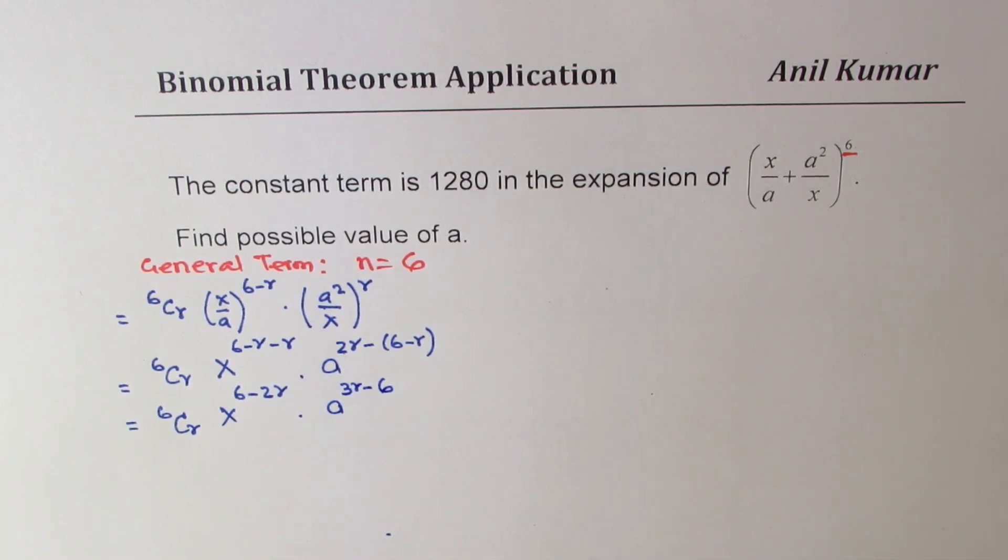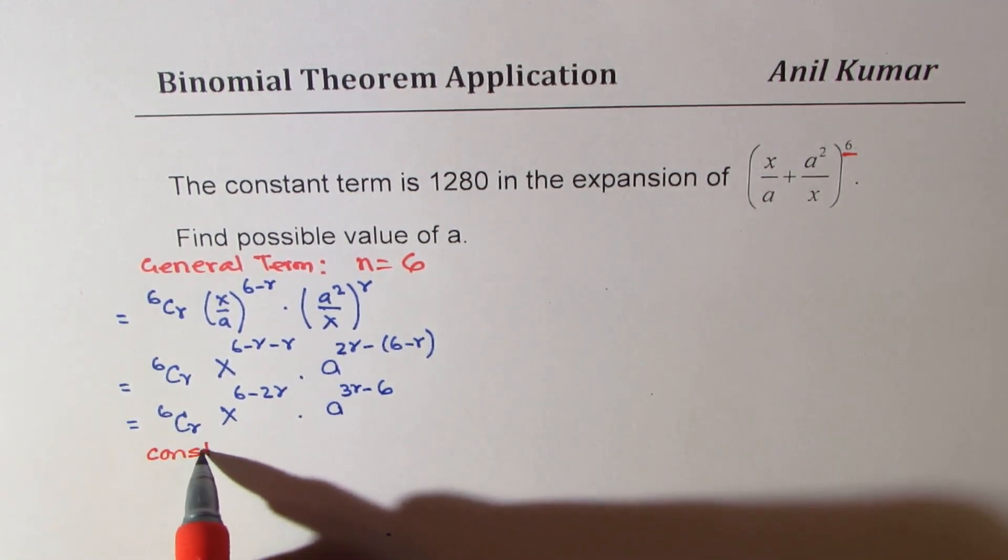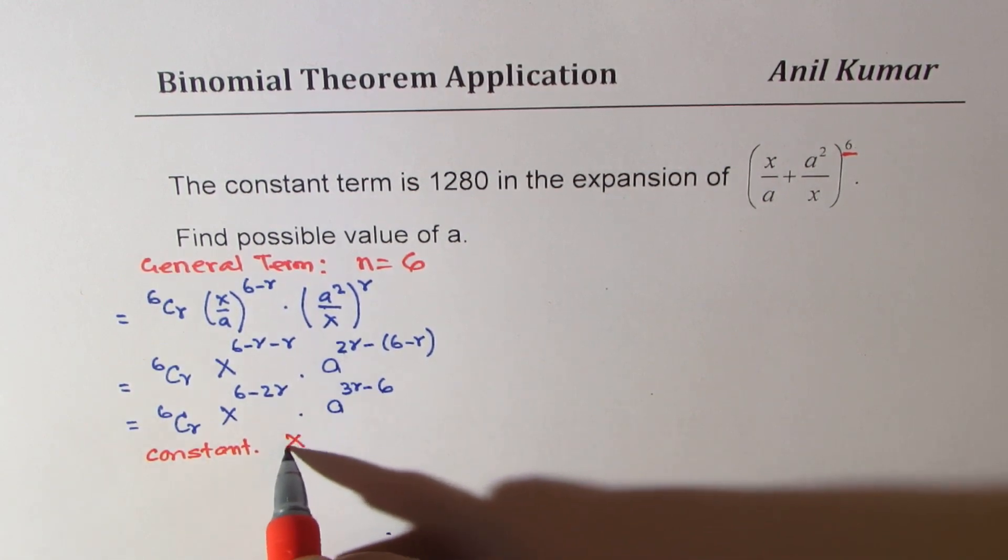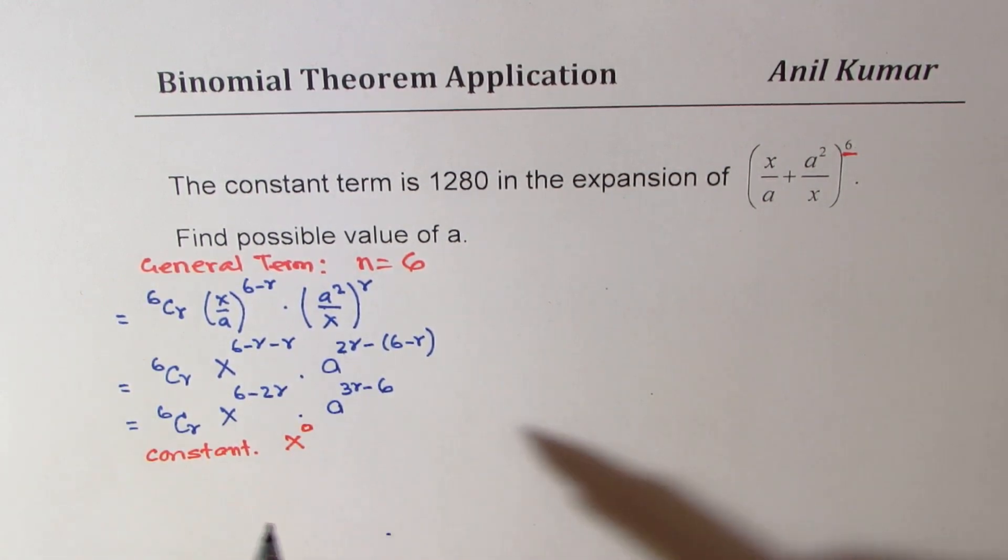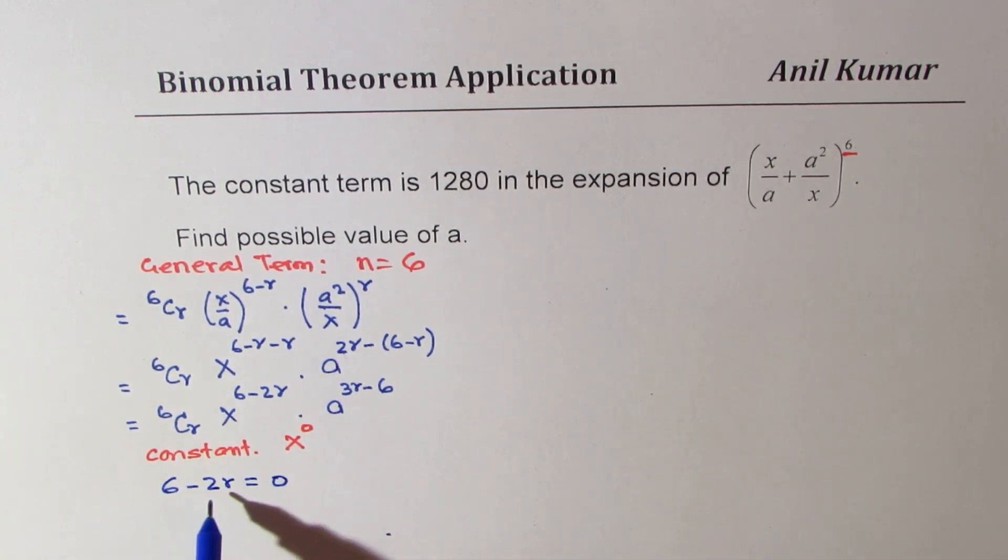Now when we say constant, it means what? When we say constant, that means we want x^0. So that means we should now equate the exponent of x to 0. So we get 6-2r equals 0. That is to say 6 equals 2r, or this implies that r equals 3, 6 divided by 2.